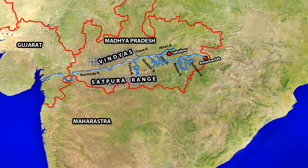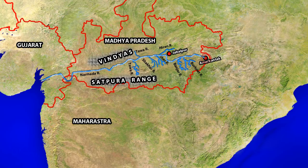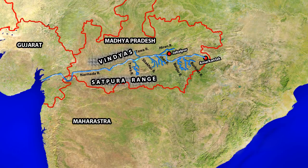The Narmada originates on the western banks of the Amarkantak Plateau, rising from the Amarkantak hill in Madhya Pradesh. It moves along the Mandi hill towards the Satpura range before reaching Jabalpur and passing through the Marble Rocks. It is joined by left bank tributaries such as Burneer, Banjar, Shar, Shakar and Tawa rivers, and right bank tributaries include Hiran, Orsang, Barna and the Kolar rivers. It enters the Narmada valley between the Vindhyas and Satpura ranges and flows through Madhya Pradesh, Maharashtra and Gujarat before draining into the Arabian Sea.